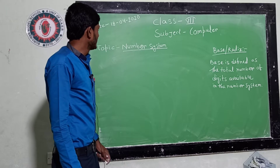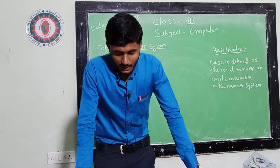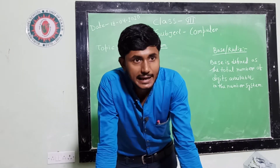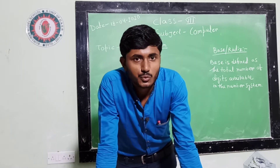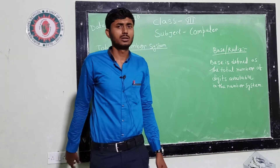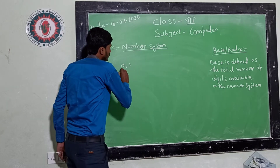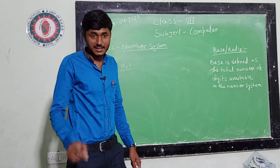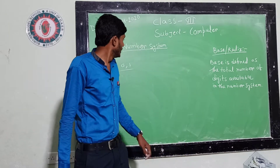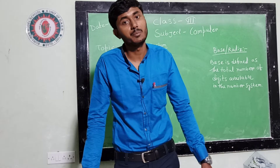Today, I will discuss about number system. A computer basically does not understand the languages we humans speak. A computer can only understand two digits, that is 0 and 1. This is expressed as the binary number system.